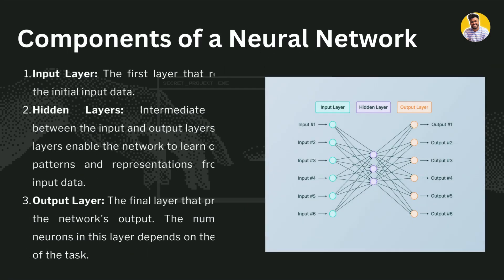The components of a neural network contain the input layer, the hidden layers, and the output layers. The input layer contains the data that you input to the neural network. The hidden layers have a preprocessing unit that can perform many kinds of operations on the data, including feature extraction, feature generation, and data normalization.